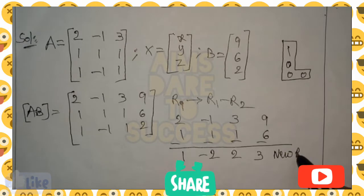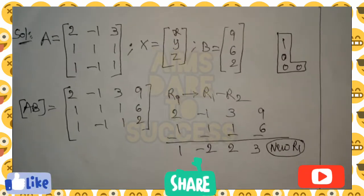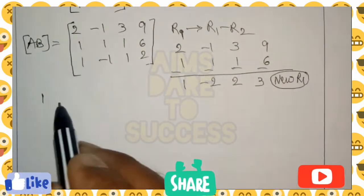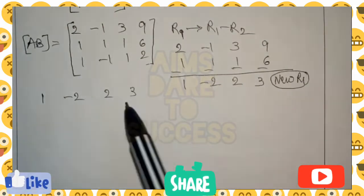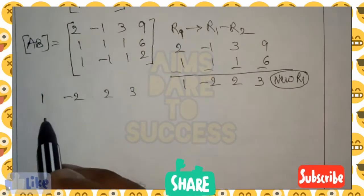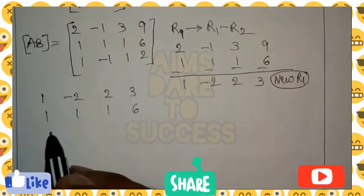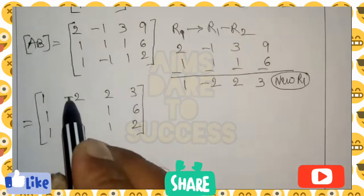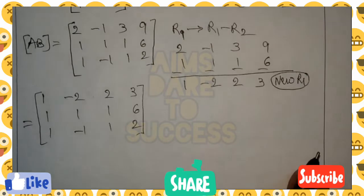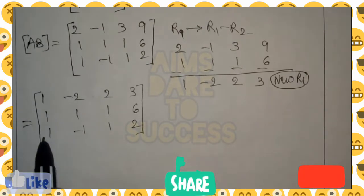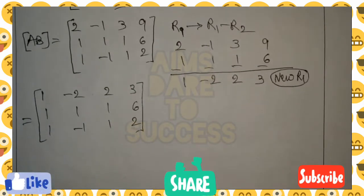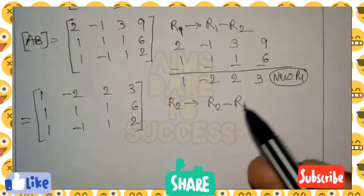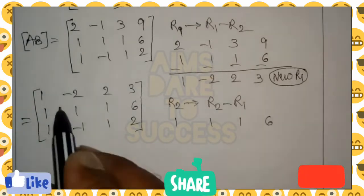After getting the new R1 values, rewrite the matrix. The new R1 is: 1, minus 2, 2, 3. R2 and R3 remain the same: R2 is 1, 1, 1, 6; R3 is 1, minus 1, 1, 2. After getting first column first element as 1, we should get row 2 and row 3 first elements as 0, using row 1 only. So R2 gives rise to R2 minus R1.